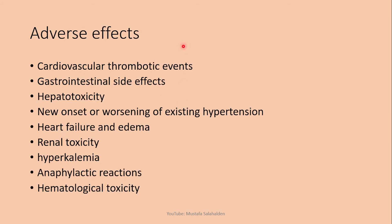Now for the adverse effects of Celecoxib. The first is cardiovascular thrombotic events, whose mechanism was explained in the mechanism of action section with two theories. To decrease these side effects, you should use the lowest effective dose for the shortest duration possible, and monitor patients for thrombotic events.